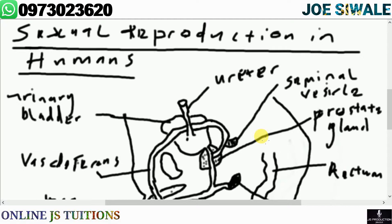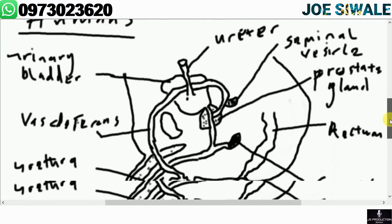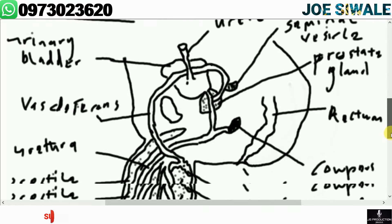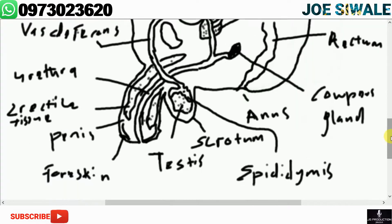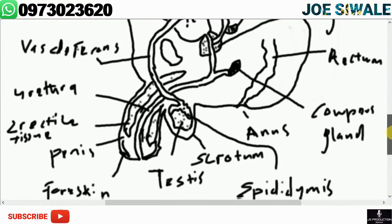The male reproductive system is made up of different structures, and you need to know each and every function of the parts that form it. We're going to start with the testes. The testes are the organs for the production of the male gametes, and the male gametes are the sperm. So the testes are where the male gametes are produced, and they are a pair — there are two of them.